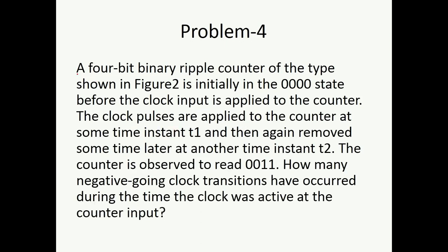Next problem is a 4-bit binary ripple counter. Ripple counter is nothing but asynchronous counter. It is initially in 0000 state before the clock input is applied. The clock pulses are applied to the counter at some time instant t1, and then removed some time later at time instant t2. Once the time has been removed, the counter is observed to read 0011, that is 3.